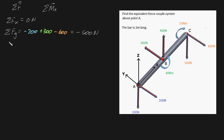Now let's do the sum of forces in the z direction. What are your forces in the z direction? That's going to be minus 100, plus 400, and minus 500. That gives 300 minus 500, which is minus 200 Newtons.